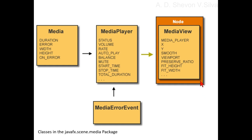The MediaView class extends the Node class and provides a view of the media being played by the MediaPlayer. It is responsible mostly for effects and transformations. Its mediaPlayer instance variable specifies the MediaPlayer object by which the media is being played. Other boolean attributes serve to apply particular effects provided by the Node class.